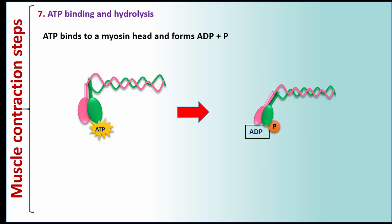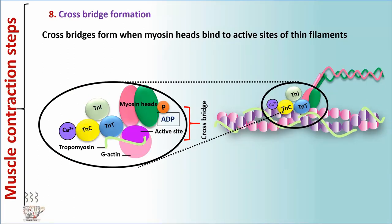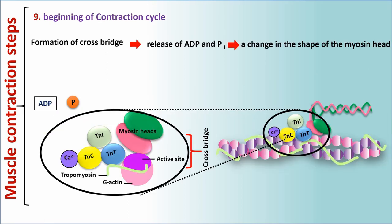Step 7: ATP binding and hydrolysis. ATP binds to a myosin head and forms ADP plus phosphate. Step 8: Cross bridge formation. Cross bridges form when the myosin head binds to the active sites of thin filaments. Step 9: Beginning of contraction cycle. Formation of the cross bridge causes release of ADP and phosphate. This in turn causes a change in the shape of the myosin head.